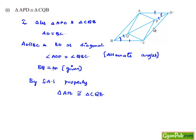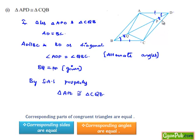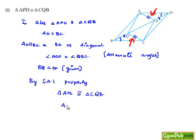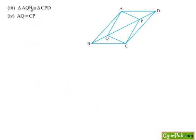When two triangles are congruent, the corresponding sides and corresponding angles can be equated. So the corresponding side AP can be equated to QC, which is what the second subpart of the proof required. For the third part, we are asked to prove that triangle AQB is congruent to triangle CPD, and in the fourth part, that AQ is equal to CP.